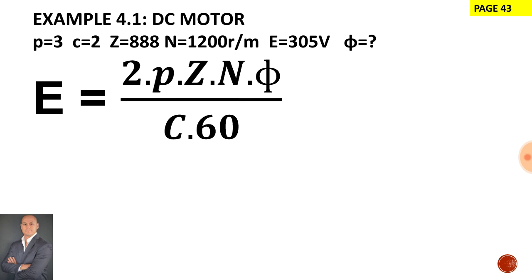The EMF generated by the armature assembly is 305 volts and the unknown factor is the flux per pole in Weber. Here's our EMF equation and this is available to us in the formula sheet.